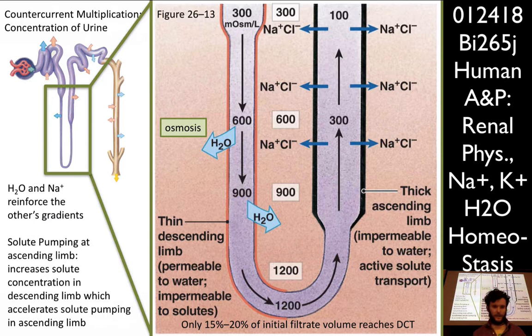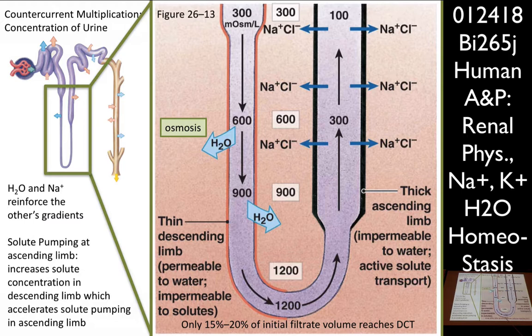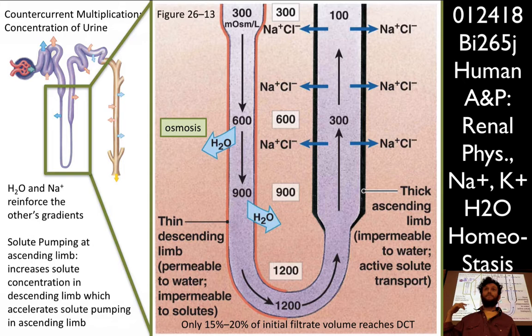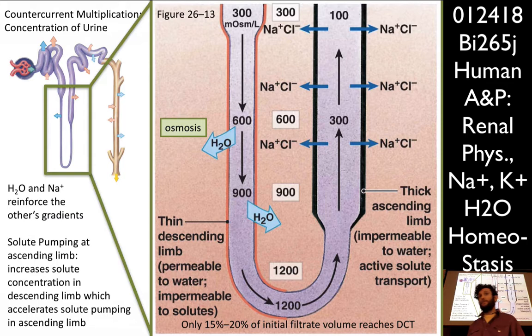Solute pumping at the ascending limb increases solute concentration in the descending limb, which accelerates solute pumping in the ascending limb. This is extremely effective — only about 15 to 20% of the initial filtrate volume at the glomerulus makes it past this point. So we've already resorbed about 80 to 85% of the fluid. We need 99%, so the rest has to happen at the distal convoluted tubule and the collecting duct.